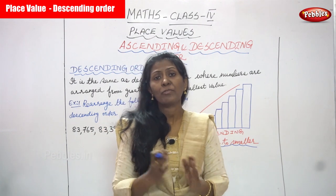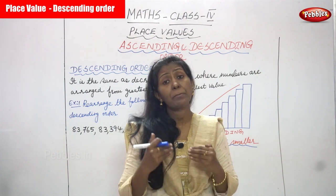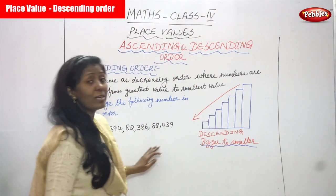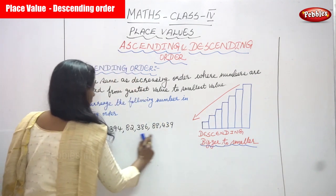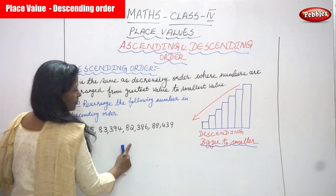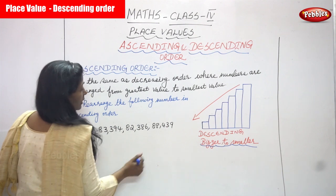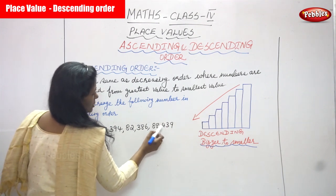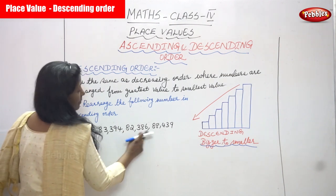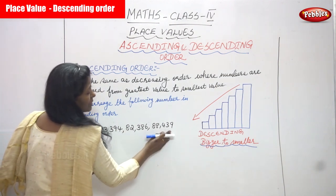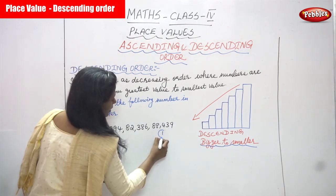Since all numbers have the same number of digits, there is no problem — we are comparing only the numbers. We have to start with the bigger number, so we give first priority to the biggest number. Looking keenly at the numbers: 88,000; 83,000; 83,000; and 82,000. So 88,000 is the very biggest number, and we give it first priority.